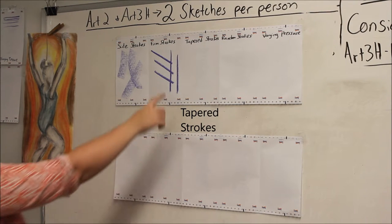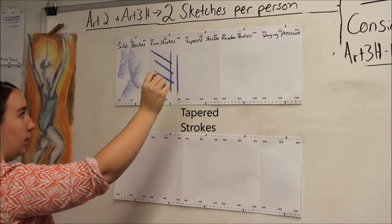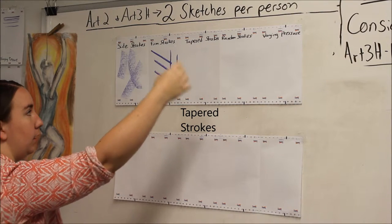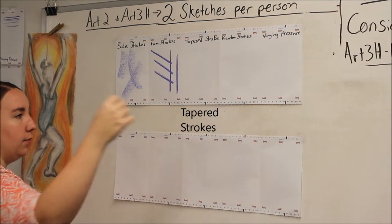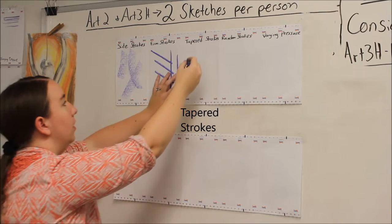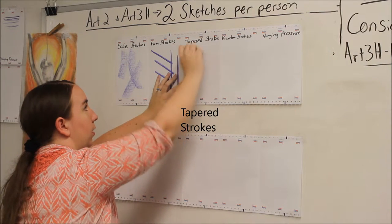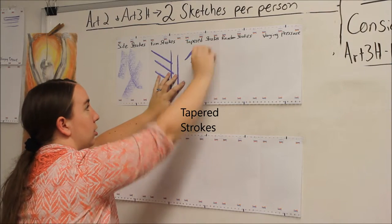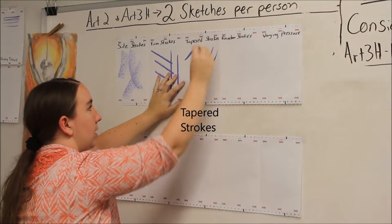Alright, for tapered strokes, it's just like the firm stroke when you're starting out, except that towards the end of the stroke, you're going to lift off the paper and you're also going to kind of twist your wrist. So as I push down, flicking, it should come to a tapered point.